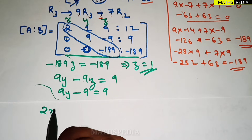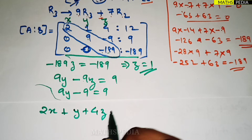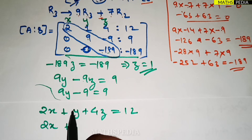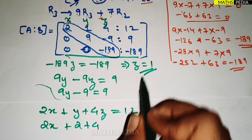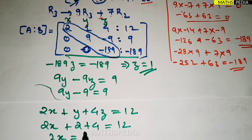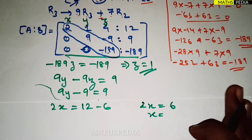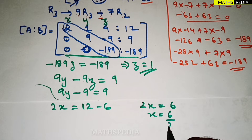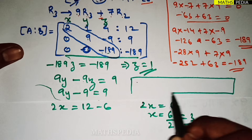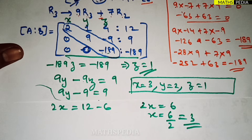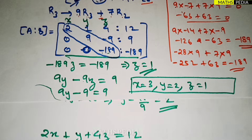Now from the first row: 2x + y + 4z = 12. Substituting y = 2 and z = 1: 2x + 2 + 4 = 12, so 2x = 12 minus 6 = 6, therefore x = 6/2 = 3. So the final solution is x = 3, y = 2, z = 1.